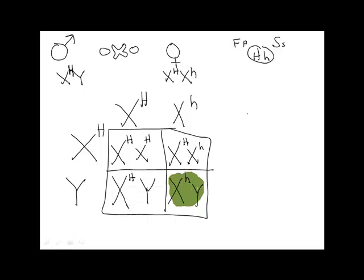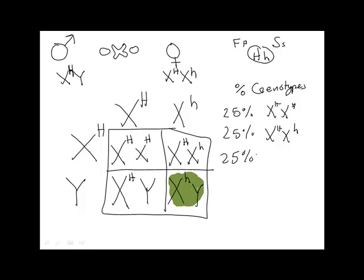Percent genotypes? Yes. Looks like we have four different genotypes. We have 25% for each. So 25% XX big H big H, 25% X big H X little h, 25% X big H Y, and 25% X little h Y.